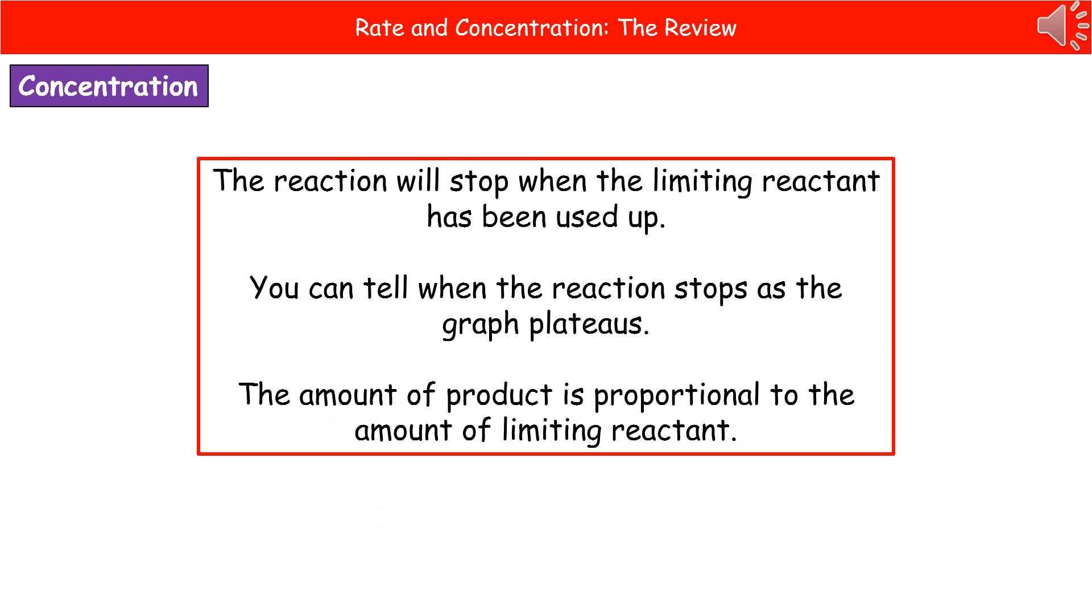One thing to bear in mind when we're talking about these chemical reactions is that a reaction actually comes to a stop once the limiting reactant has been used up. So the limiting reactant is the chemical reactant that's going to be used up first. And if you're looking at one of these graphs of a reaction, you can tell where the reaction stops because that's where the graph plateaus or levels off to a horizontal line. The amount of product that we make is proportional to the amount of limiting reactant.